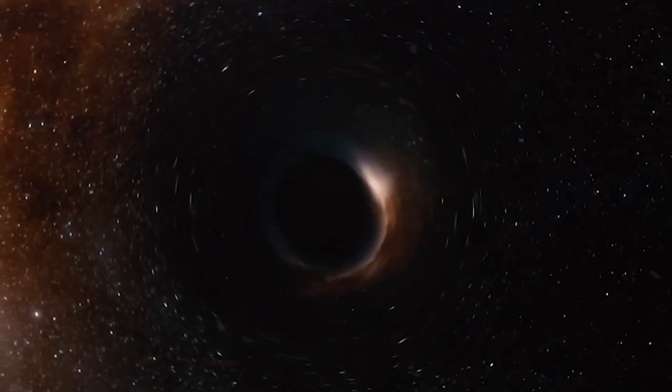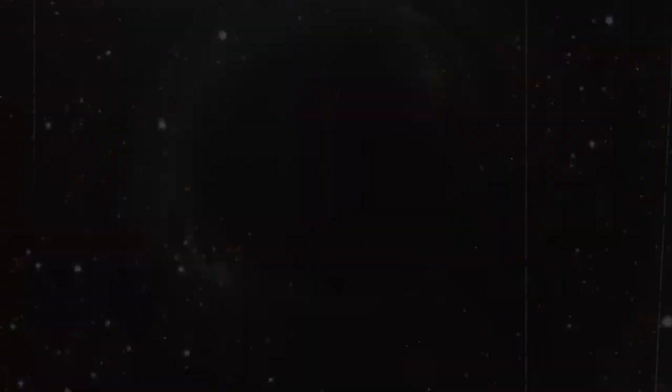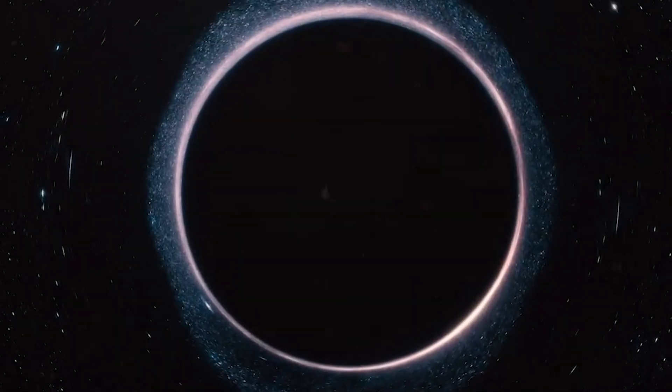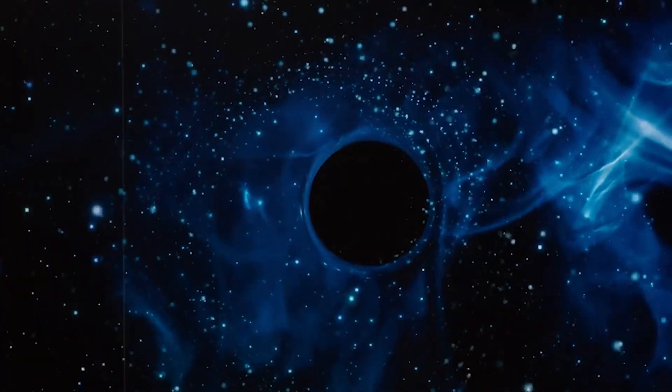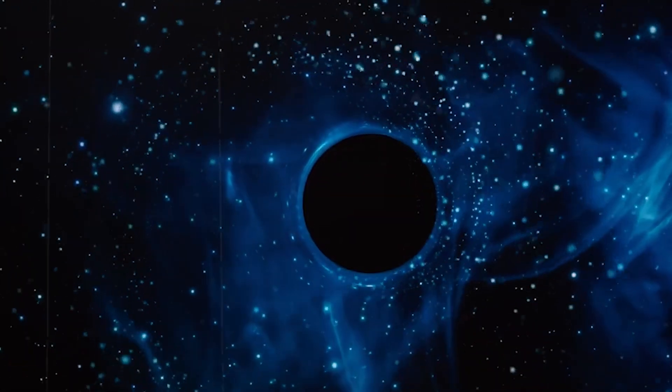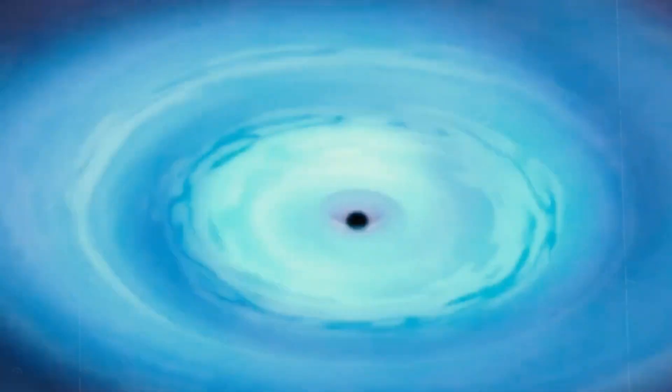According to current models, the first black holes should have formed from the collapse of massive stars and should have grown slowly by accreting matter and merging with other black holes. But this black hole is too massive and too old to fit this scenario, suggesting that there might be another way to form black holes in the early universe, such as the direct collapse of dense gas clouds.